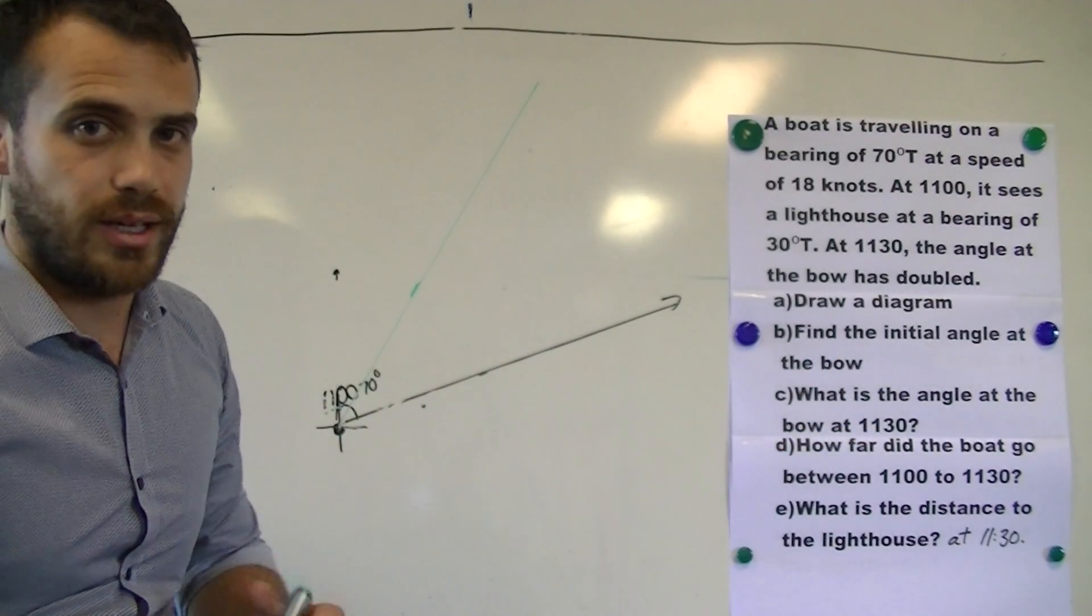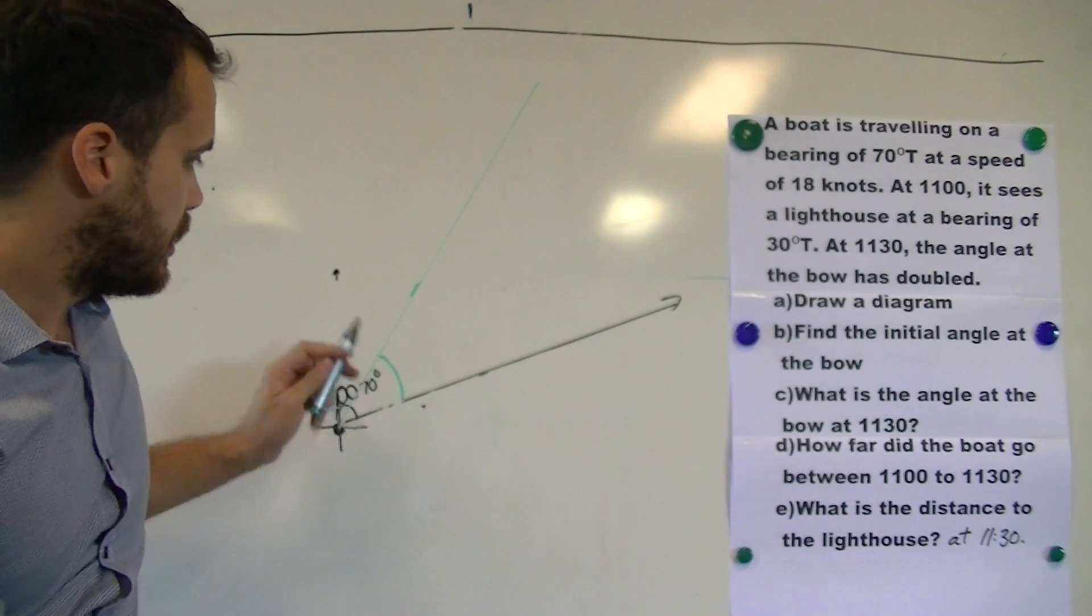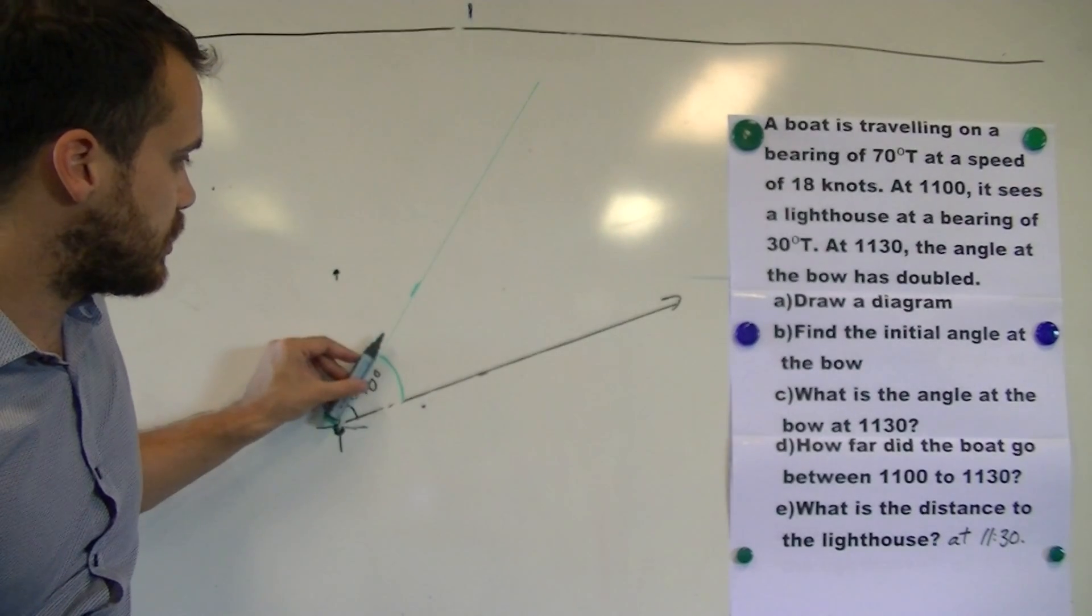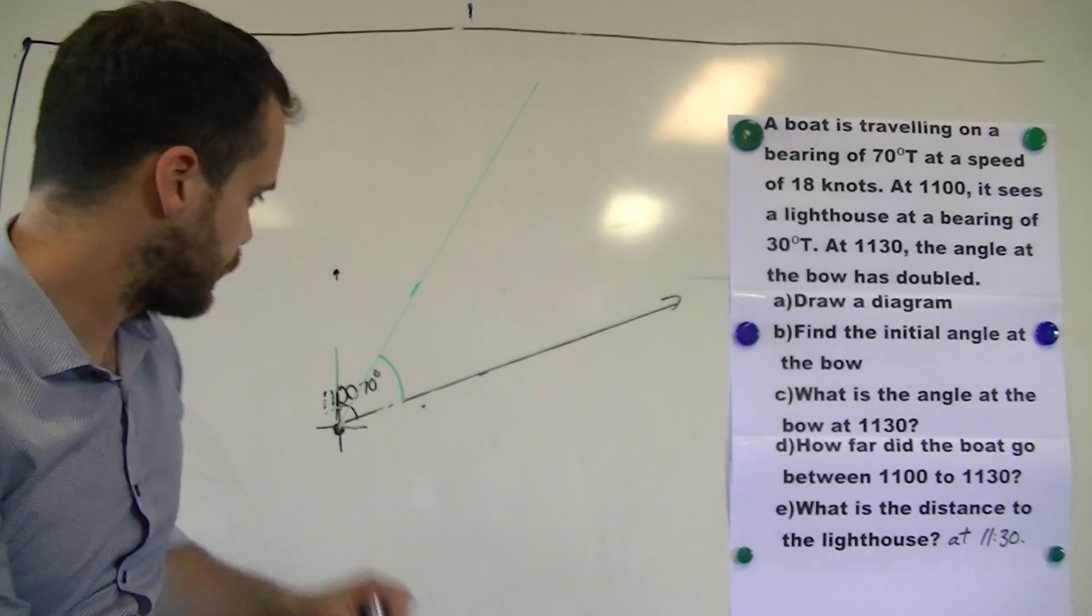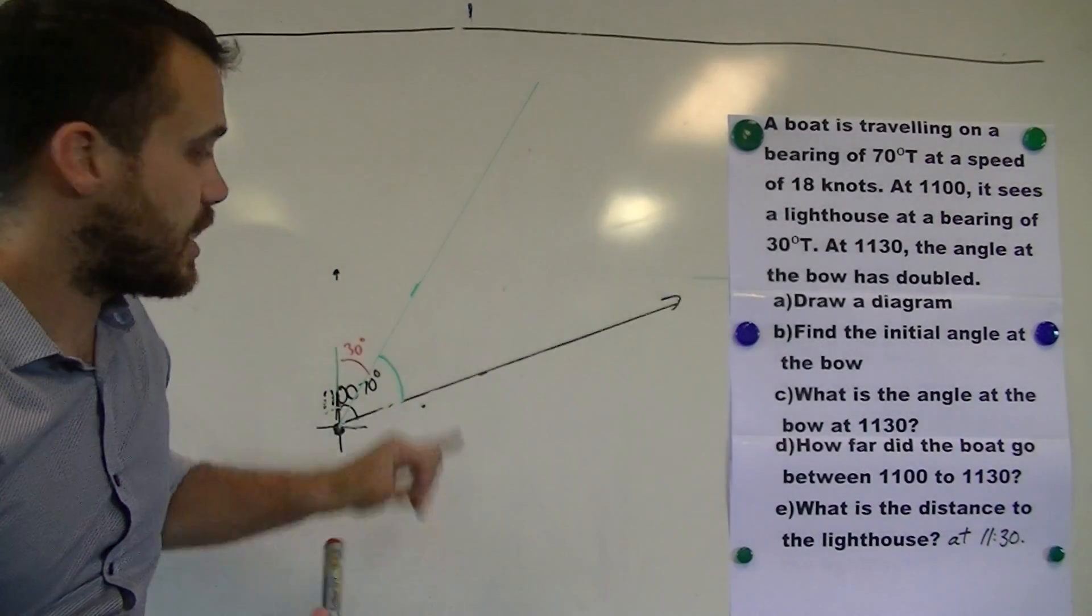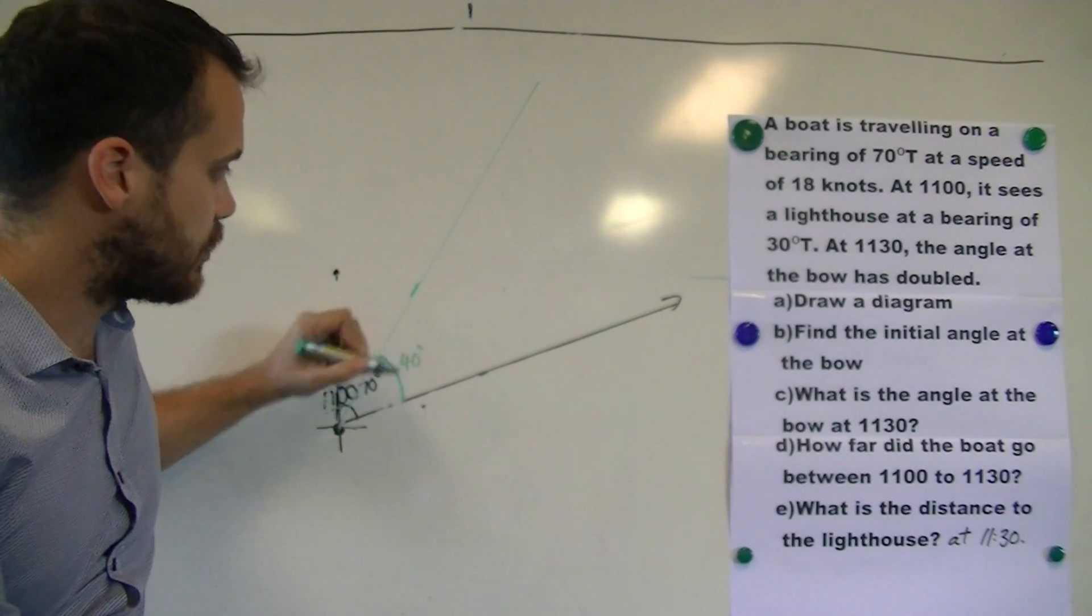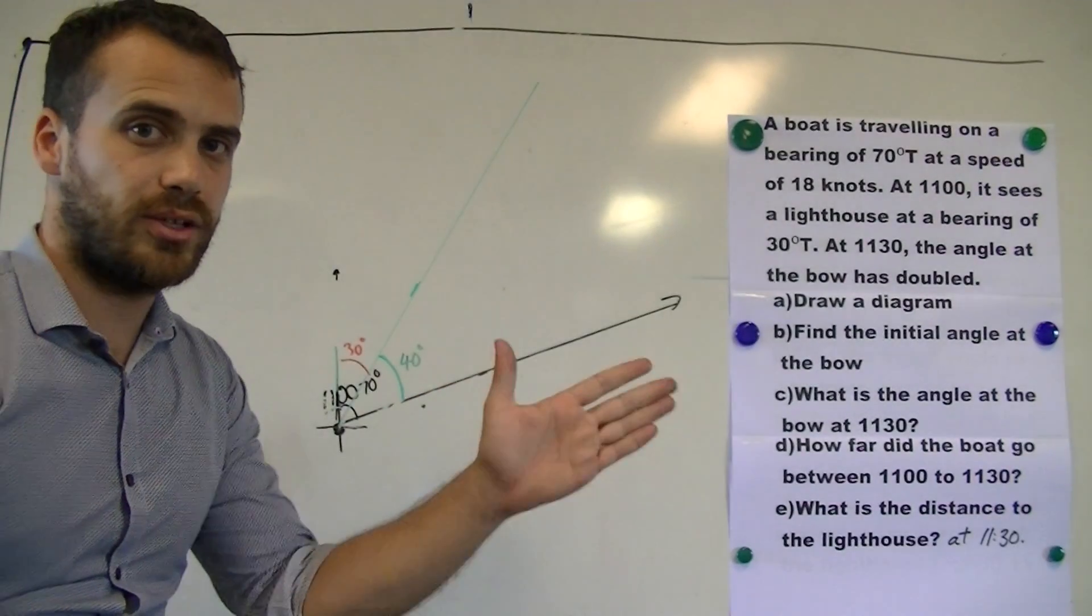The initial angle at the bow is this angle in here. Now if it's 70 degrees to where we were heading, and if it was 30 degrees to the lighthouse, 30 degrees to the lighthouse, that means that this initial angle at the bow must be 40 degrees. So our lighthouse is somewhere here. It's at an angle of 40 degrees.